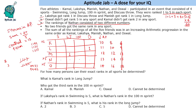So both Oswald and Nathan cannot get rank 5. We must distribute rank 5 exactly 4 times among the remaining people. Kamal's total is 11, so he cannot have rank 5 twice. Manish's total is 12: if we give him two 5s, his ranks become 5,5,1,1. For Laksh with total 11, giving one 5 gives 1,1,3,5.